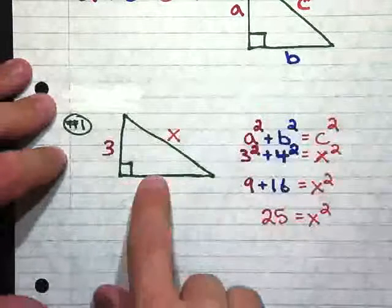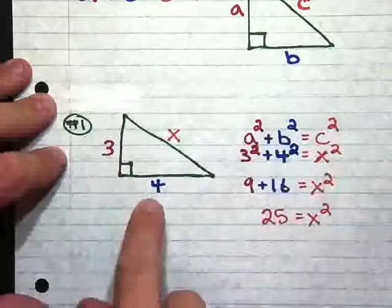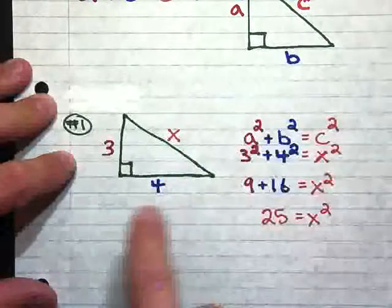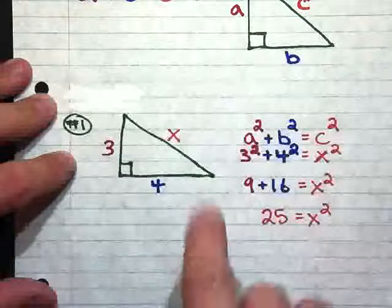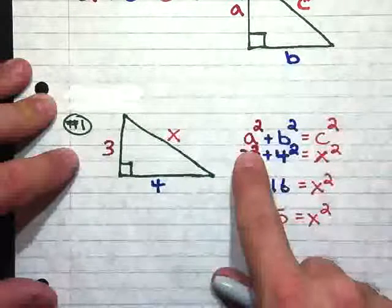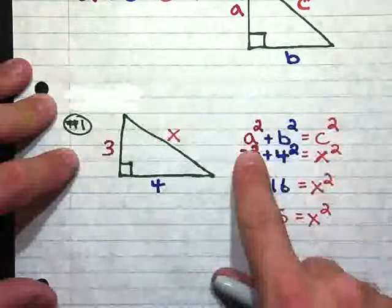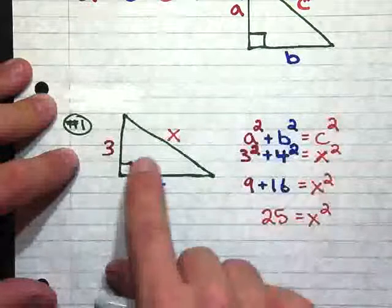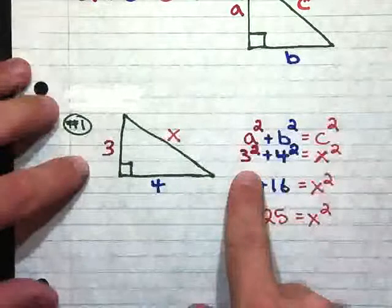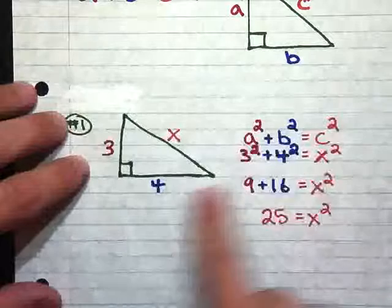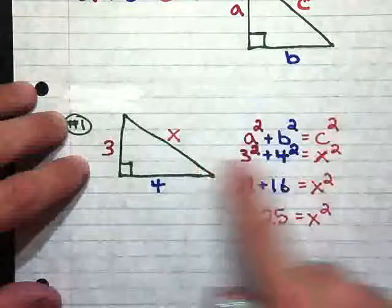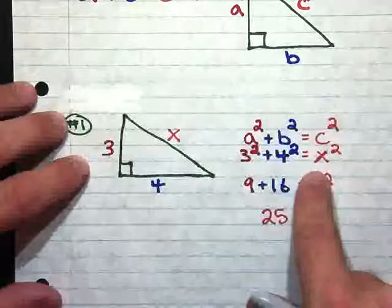So we have our right triangle with a side of 3, a side of 4, and a side of X. And we want to solve this right triangle for the length of X. So what we're going to do is plug in our lengths into the Pythagorean Theorem. A squared plus B squared equals C squared. So A is 3, so we end up with 3 squared. And then B is 4, so we end up with plus 4 squared equals C squared, which is X.